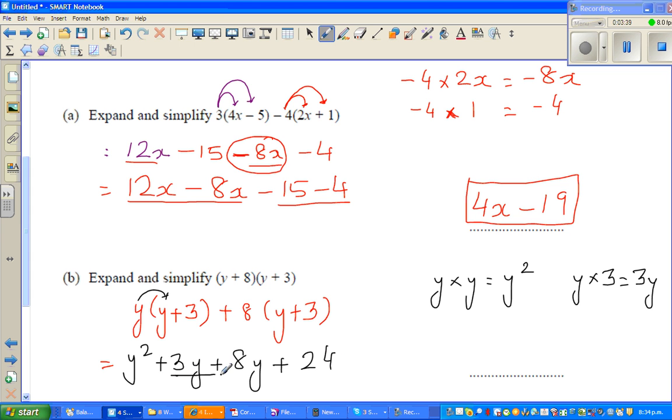These two are only like terms. You can only simplify these two. So this is 3 lots of y plus 8 lots of y. This y squared will remain y squared. This is 11y plus 24. This is the answer.